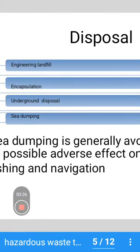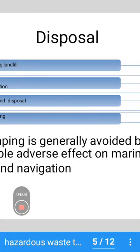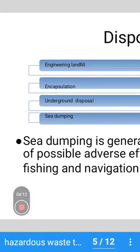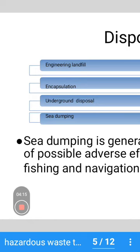Next is disposal. Normally disposal is of four types: engineering landfill, sea dumping, underground disposal, and encapsulation. These are the four ways by which we can dispose of hazardous waste in the environment. Sea dumping is generally avoided because of its possible adverse effects on marine life, fishing and navigation.